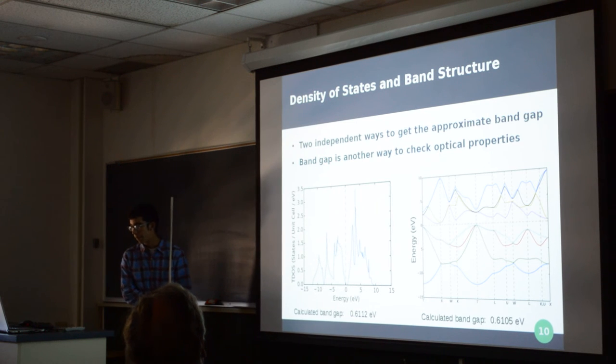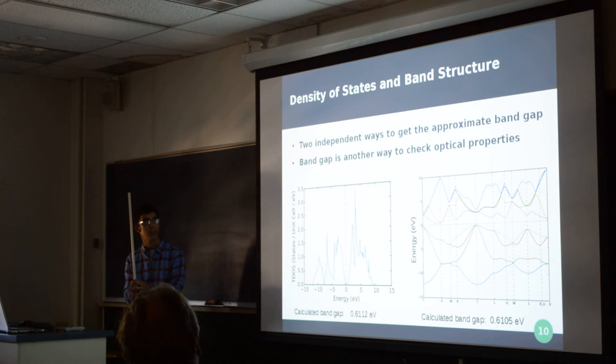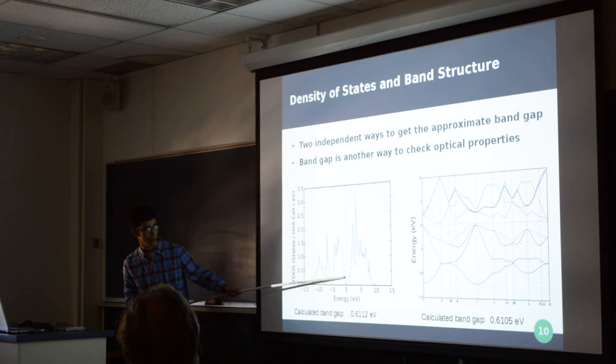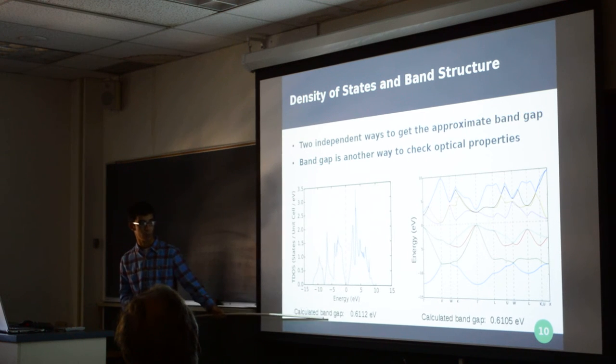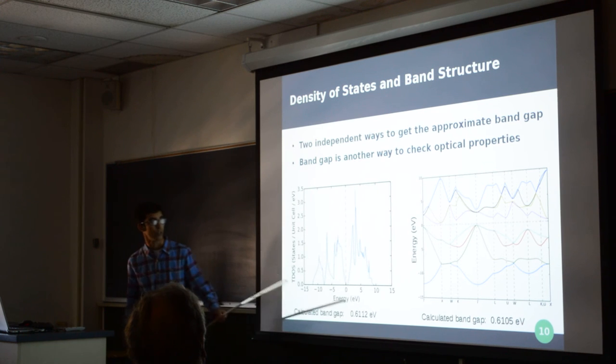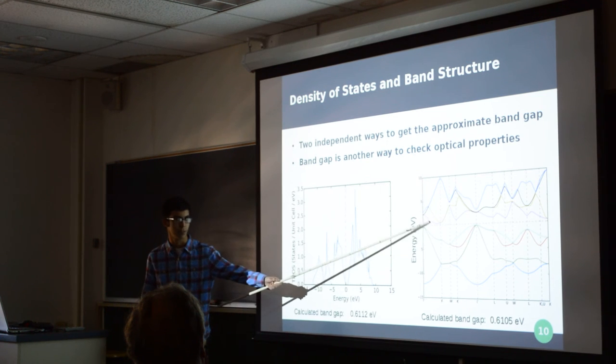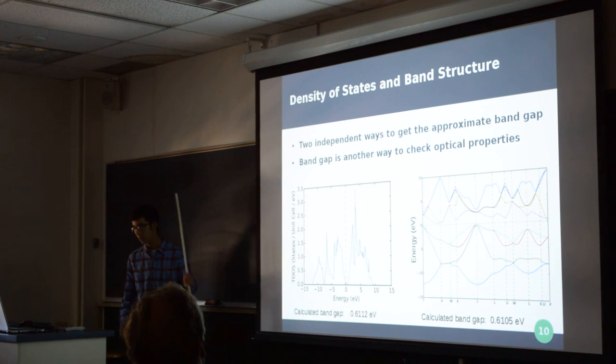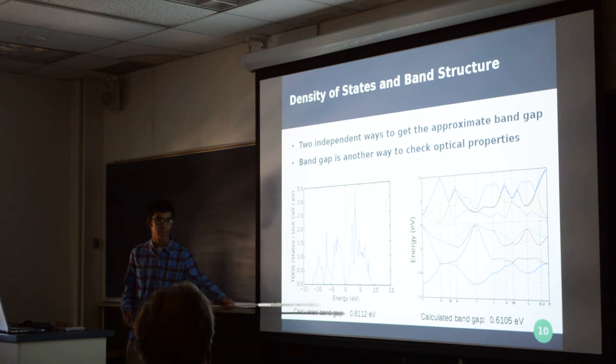The next tests that I do are the density of states and band structure tests. Now, these are two independent ways to get the band gap. And from the band gap, we can also check the optical properties. So, for the density of states, the band gap is represented here by this portion of the graph. There are no states available. And that's calculated to be 0.612 electron volts. And for the band structure, it's the gap between the top of the conduction band and the bottom of the valence band. And the gap here vertically would be about 0.6105 electron volts. Now, there's a discrepancy because I'm doing this with silicon. There's a huge discrepancy between the experimental band gap and the calculated band gap. But I'll get to that in just a second.